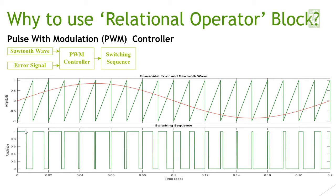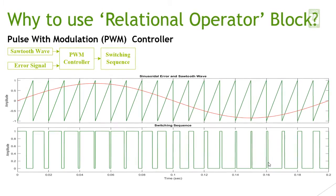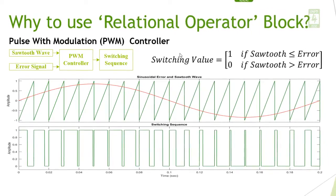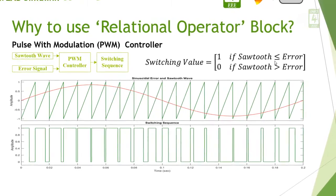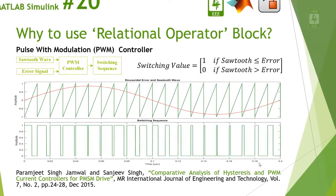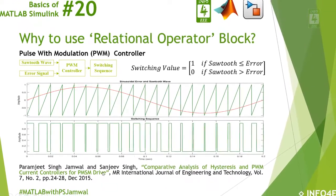With this logic it generates this switching sequence and it is clearly visible that in this period error is more hence switch on time is more, and in this period error is less hence on time is less. This logic is also given in mathematical form here. You can find PWM controller application for PMC drive in this paper.